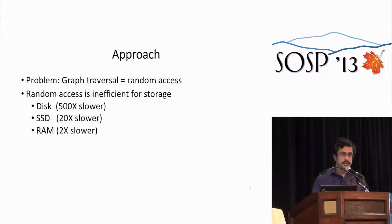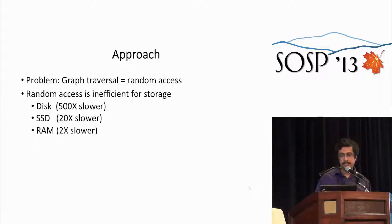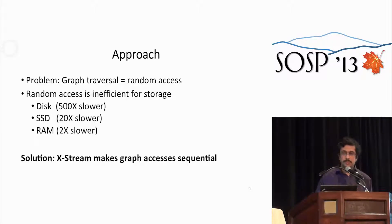The problem with processing large graphs on a single machine is graph traversal causing a lot of random access, and random access is inefficient for all kinds of storage. For disk, random access is about 500 times slower. For SSD, about 20 times slower. Even for RAM, sequential access is twice as fast as random access. So what we've done in X-Stream is make graph accesses sequential, and that's what lets us perform well on a single machine.